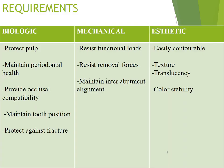Provisional restorations have three main requirements: biological, mechanical, and aesthetic. According to the biologic requirement, it should be able to protect the pulp, maintain the periodontal health, have occlusal compatibility, maintain tooth position, and protect against fractures. Mechanical requirements are that it should resist removal forces, resist functional loads, and maintain interabutment alignment. The aesthetic requirement is that it should be easily contourable, have proper texture, translucency, and color stability.